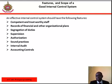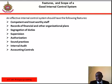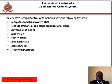Competent and trustworthy staff: people in charge of the internal control system must be reliable and highly competent about the work. Lack of knowledge and dishonesty will spoil the efficiency of the system. Records of financial and other organizational plans: a good internal control system must have good documentation systems like filing, recording, classifying, etc.